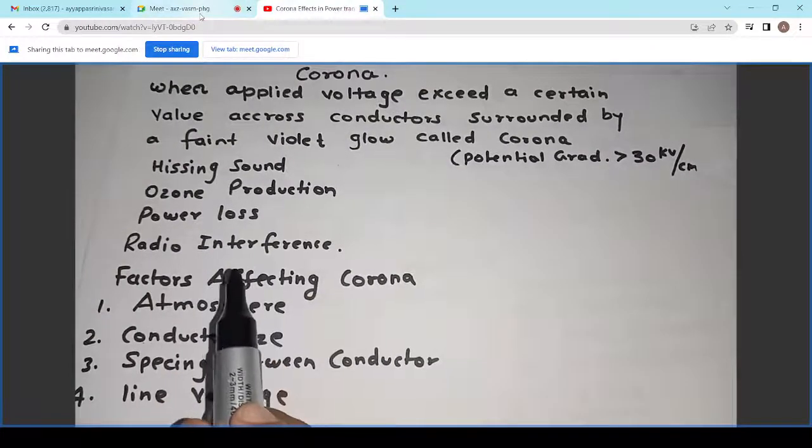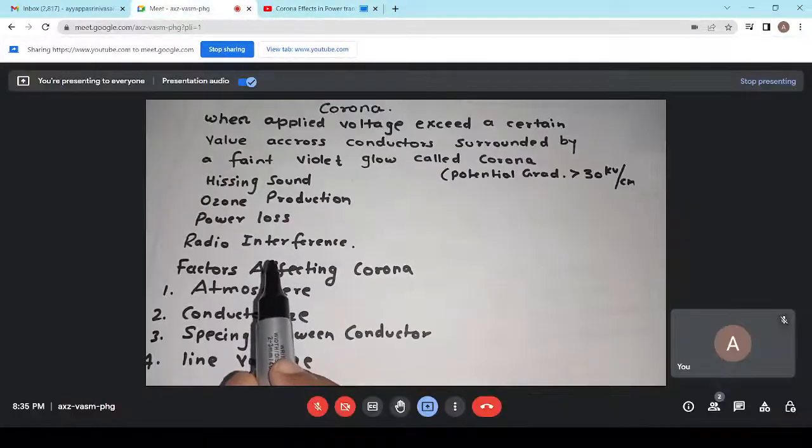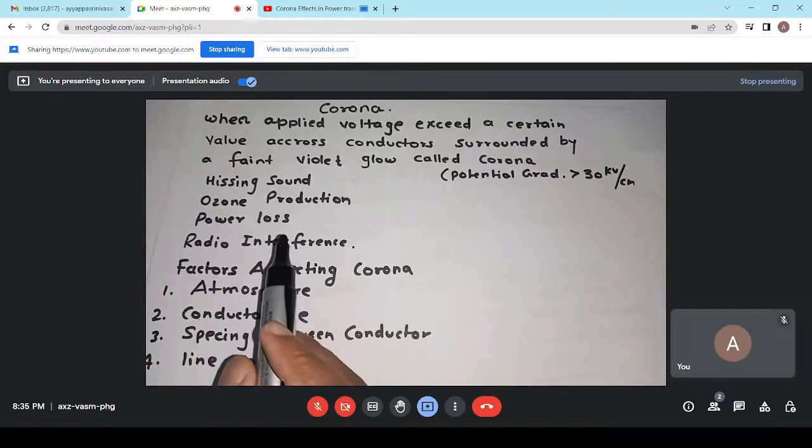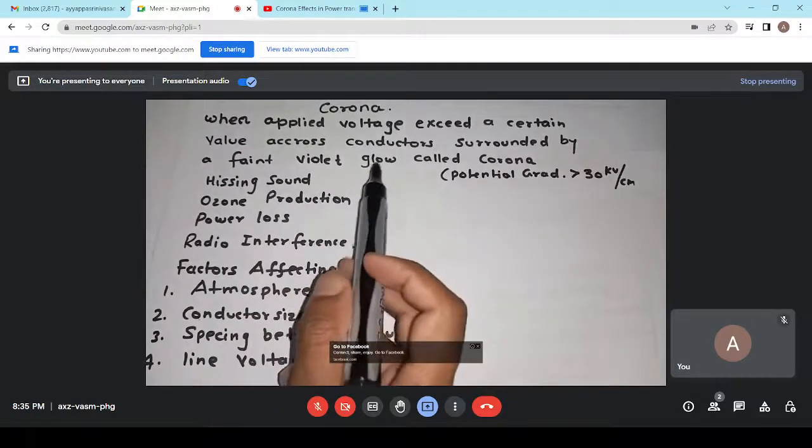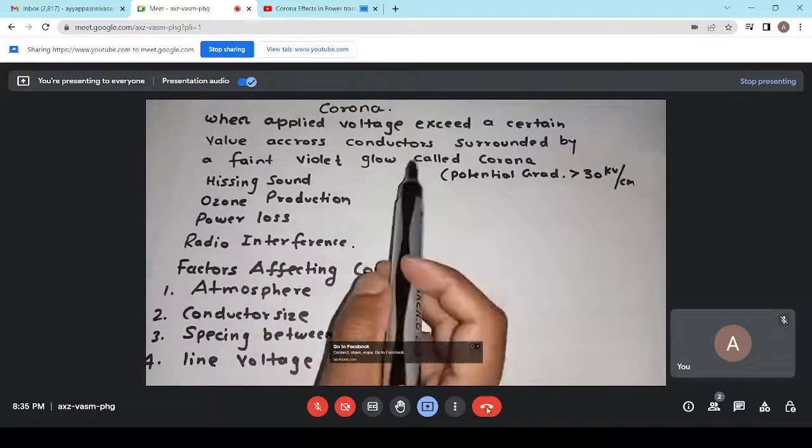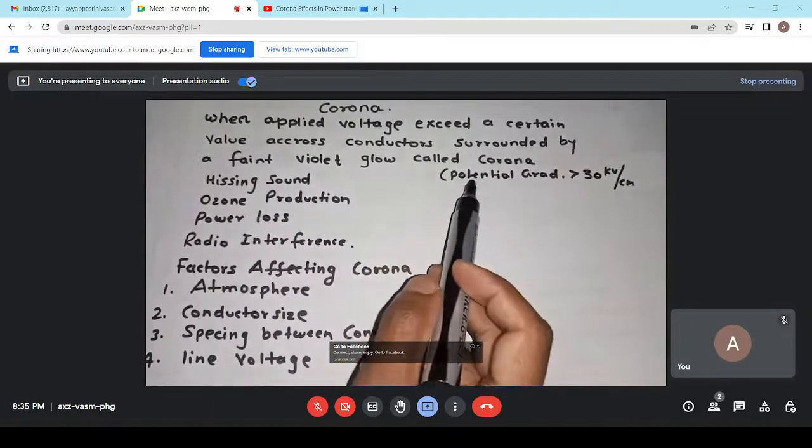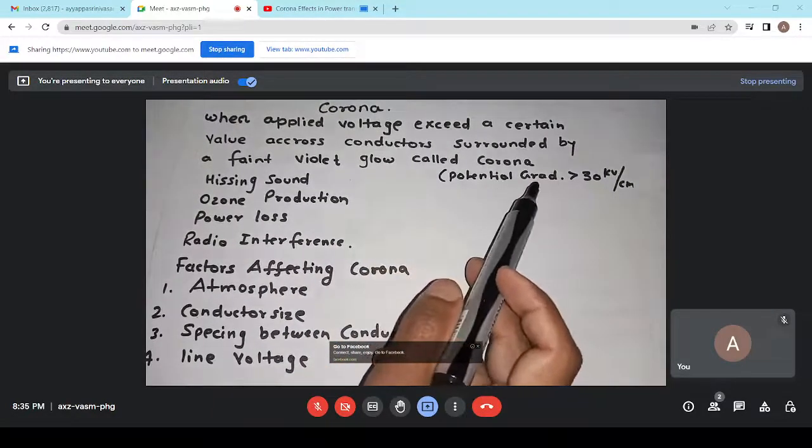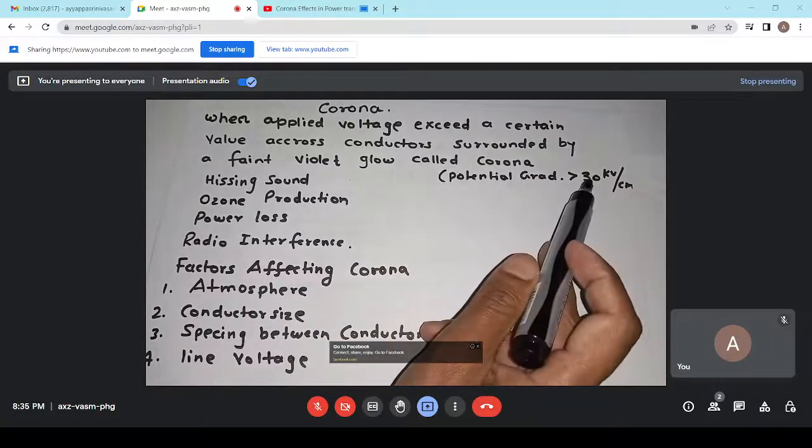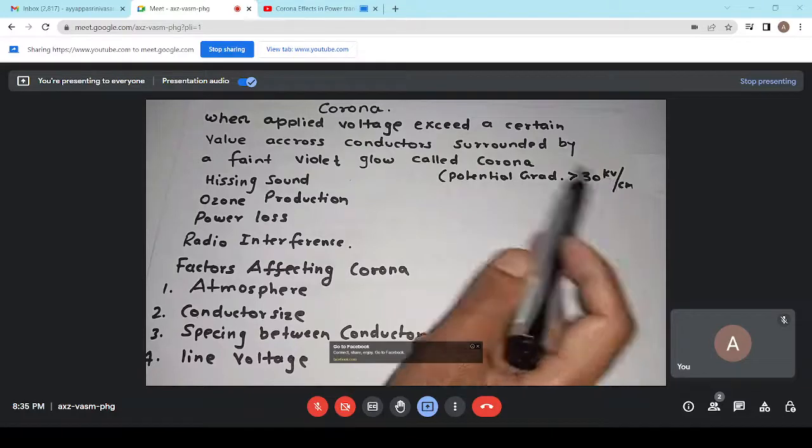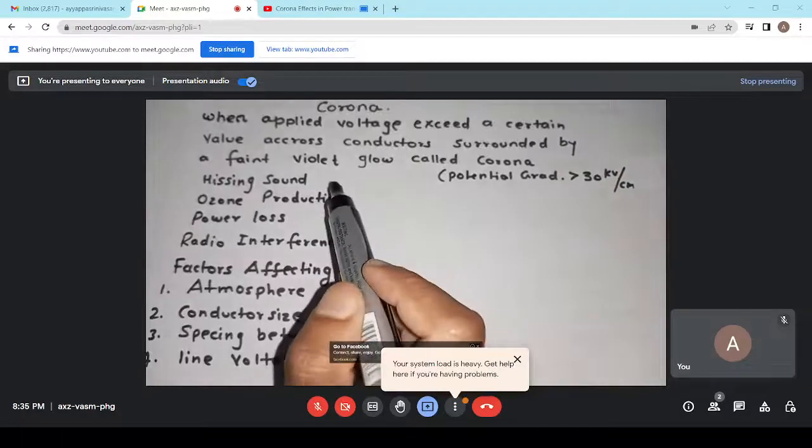Hello. Today, we will discuss about the corona effect in power transmission lines. When applied voltage exceeds a certain value across conductors surrounded by a faint violet glow called corona, so especially whenever the potential gradient is more than 30 kilovolt per centimeter, then corona will present.